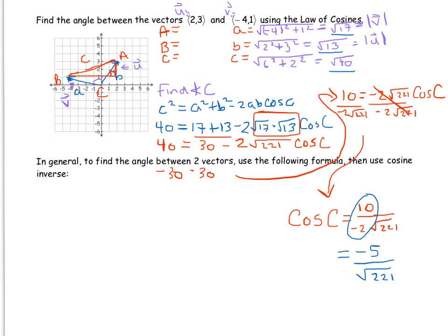We'll never have to use the law of cosines again to find the angle between two vectors once we look at what this result is saying. That root 221 came from root 17 times root 13, and those are the magnitudes of U and V. So root 221 is simply the magnitude of U times the magnitude of V.